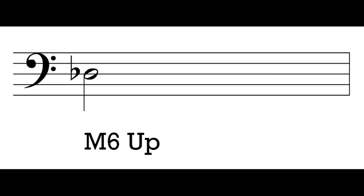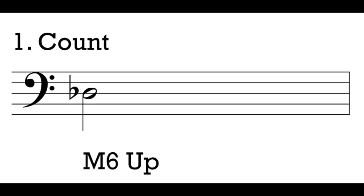Let's jump to an example. We're going to start with an ascending interval, writing an interval up. These are usually a little bit simpler than the descending intervals. Here we've got a D-flat in our bass clef, and we want to write a pitch a major 6th up from this D-flat. So what are we going to do? We're going to start with step 1, which is count.